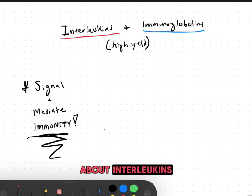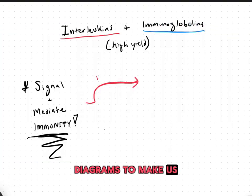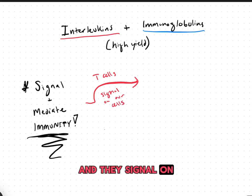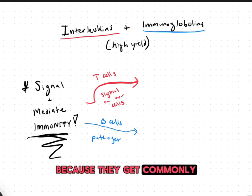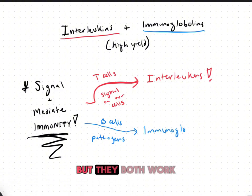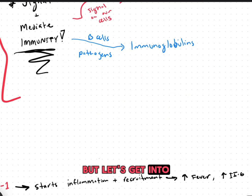Today we're going to be talking about interleukins, and we have picture diagrams to help us remember our mnemonic at the end. Interleukins are primarily made by our T cells and they signal on our cells. We're also going to talk about immunoglobulins just a little bit because they get commonly confused — they are made by our B cells and attach onto our pathogens. But both work hand in hand with our immune system, signaling and mediating immunity.